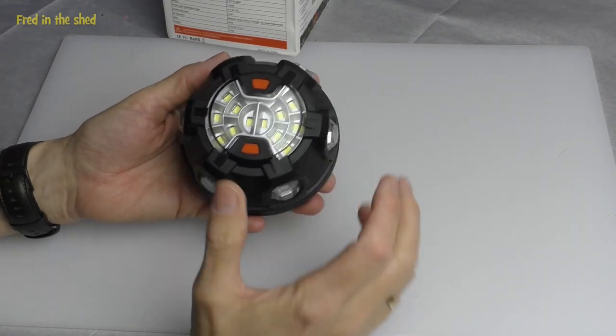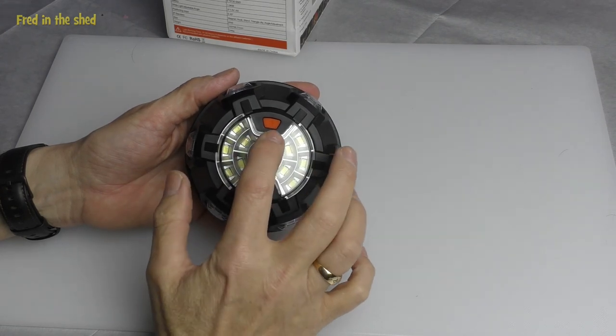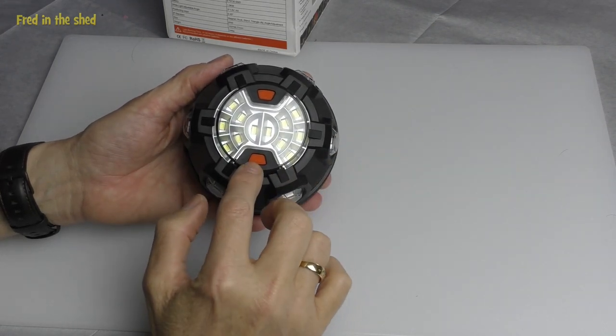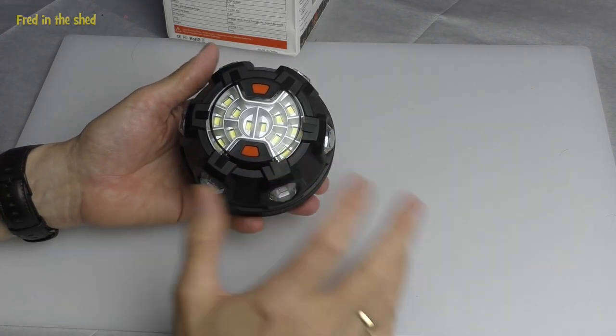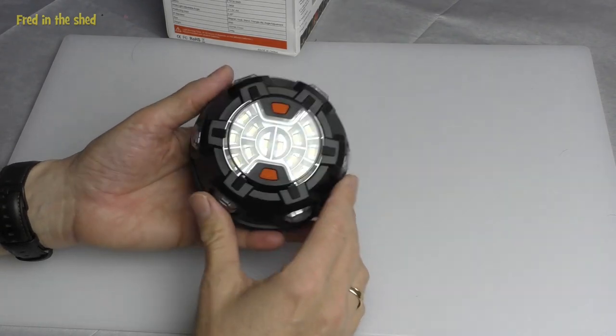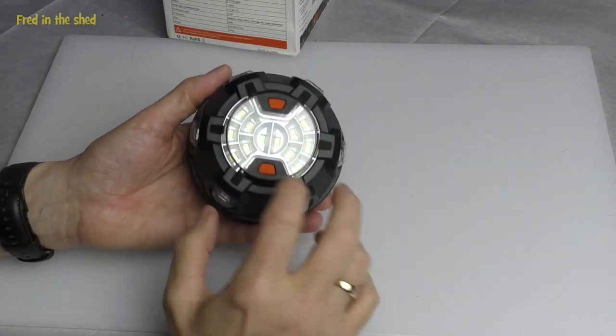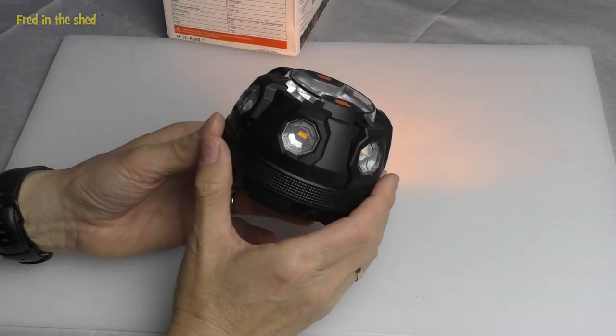Switching the unit on, well, simplicity itself. You've just got two buttons on the top here. This one is for the white work light, and then this is the emergency amber light. Let's look at the amber lights first. So you have to hold this down for three seconds. That's quite a good thing, because if you've got this in the back of your car, in a tool bag, or knocking about your boot, you don't want it to be jogged on by accident. So you have to hold it down for three seconds, and that starts the light.